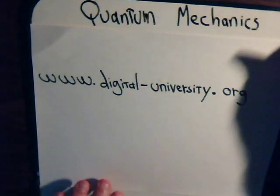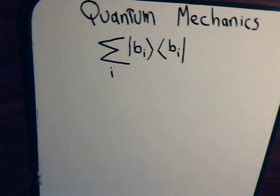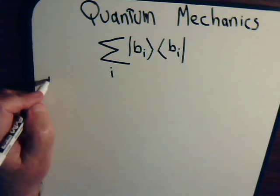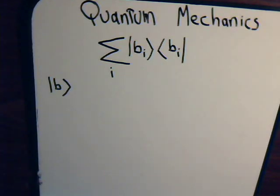In this video we want to establish why this is considered the identity operator, where the B's, if you will, these are an orthonormal set of basis vectors.